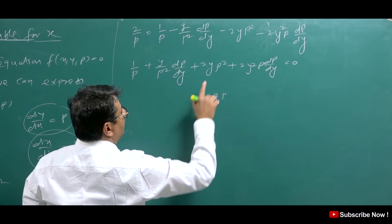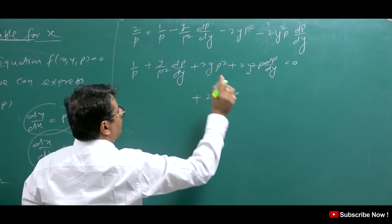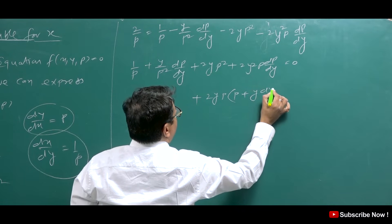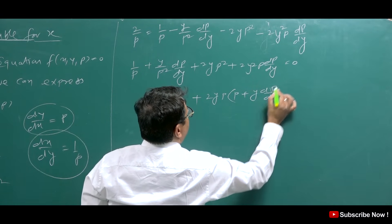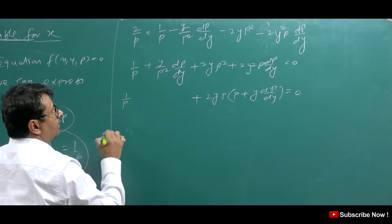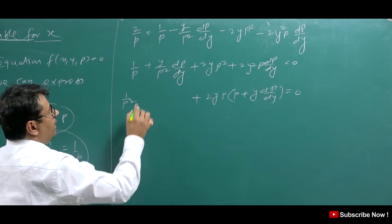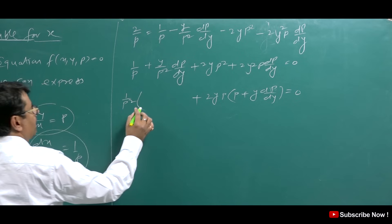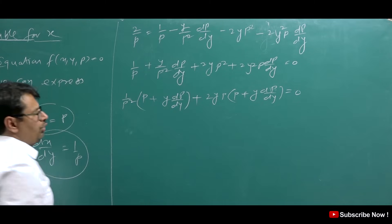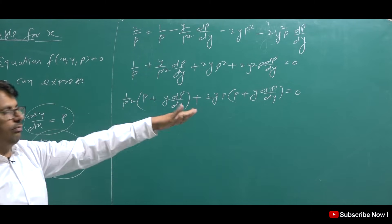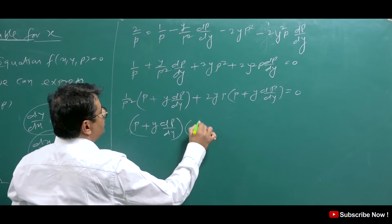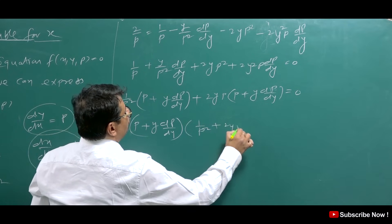2Y and P. Student, here P adds, plus 2Y and P. So here Y times DP/DY. Now how do we simplify this? 1/P is common, so we factor out 1/P². Student, here how much will be P, and Y times DP/DY, then P² + 2Y times P = 0.